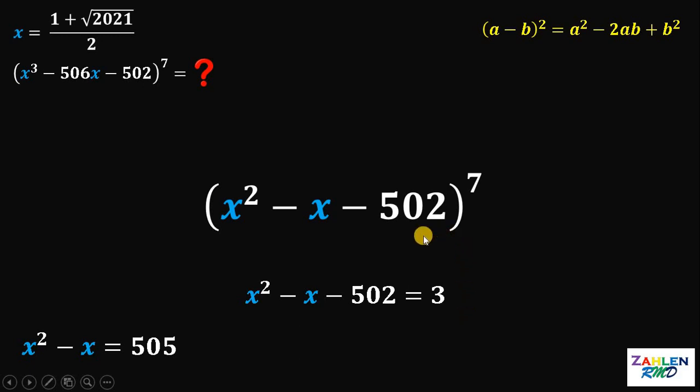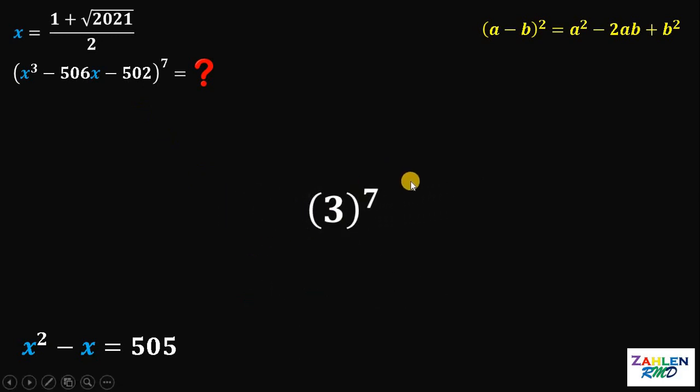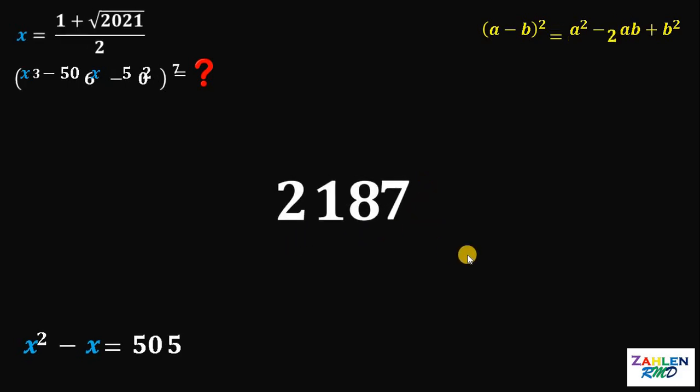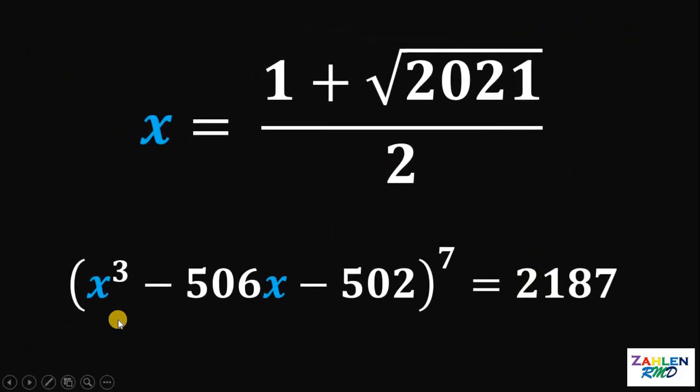And that's exactly the expression inside the parentheses. Therefore, our expression can be trimmed down into 3 raised to 7, which is equivalent to 2187. Therefore, the value of x cubed minus 506x minus 502 raised to 7 is equivalent to 2187. And as always, we are done.